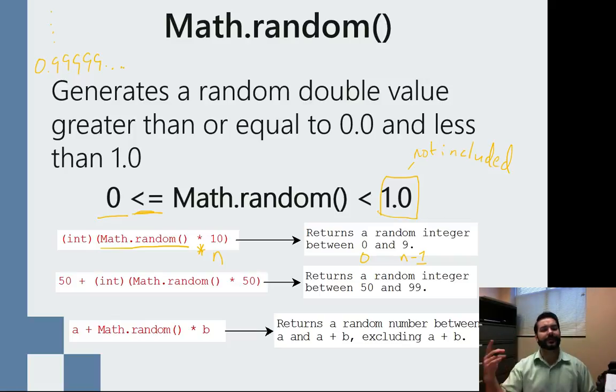So how do I continue with that train of thought? How would I generate, say, a number from 1 to 100?